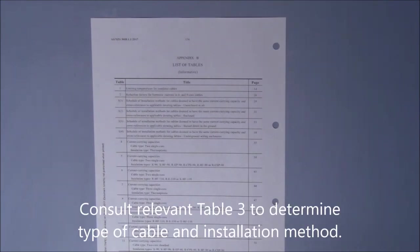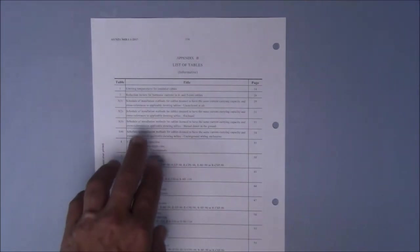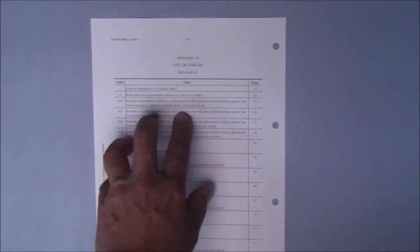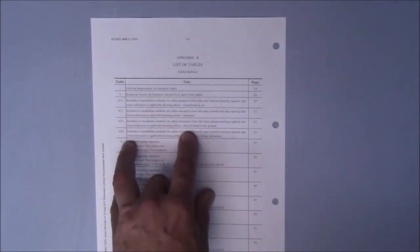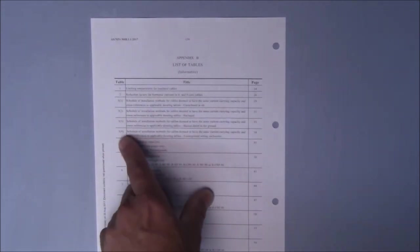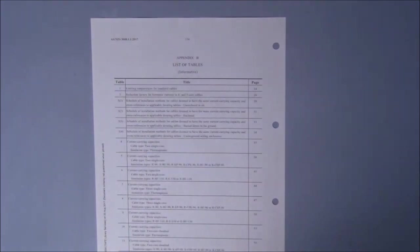Now to determine our installation method, step one is always to go to the appropriate table 3: either 3-1, 3-2, 3-3, or 3-4. Tables 3-1 and 3-2 are above ground. Tables 3-3 and 3-4 relate to installations that are underground.